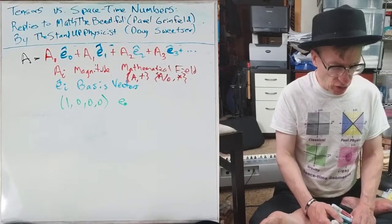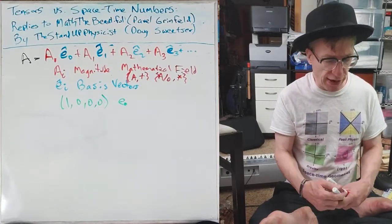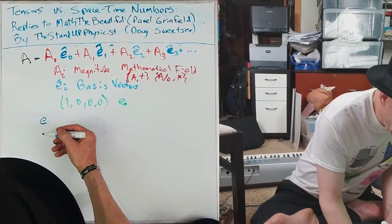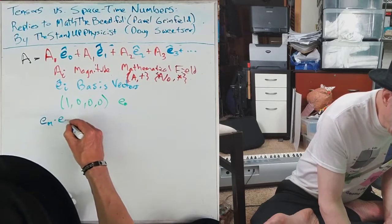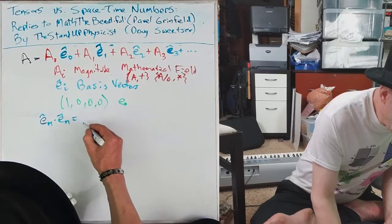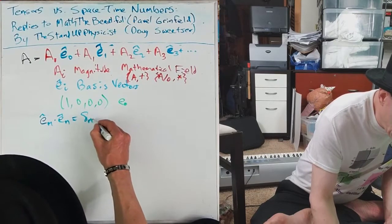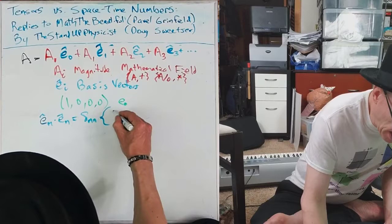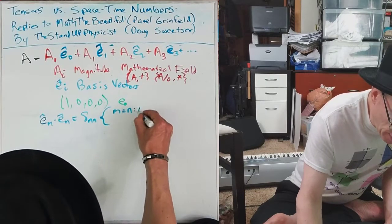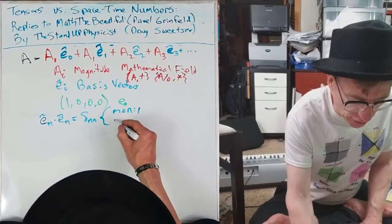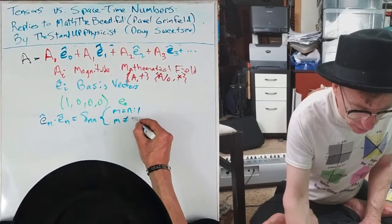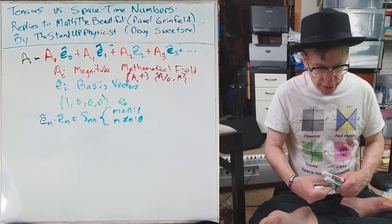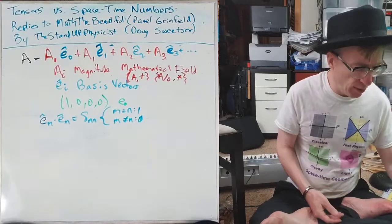And what they'll usually do is talk about the dot product of two basis vectors. So let's do that. E_M dotted to E_N equals this Kronecker delta function, which splits into two values. If M equals N, then you get one, you get unity. Unity is a good thing. And if they are not equal, then you get zero.